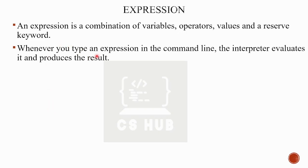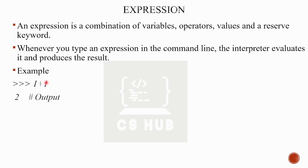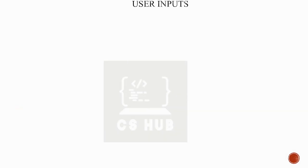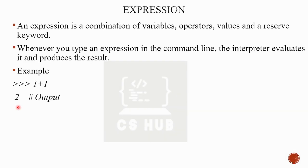When you type an expression in the command line, the interpreter evaluates it and produces the result. Here is a simple expression: 1 plus 1. The value 1 is a constant, plus is the operator, and the output is 2. An expression can include variables, operators, values, reserved words, and so on.